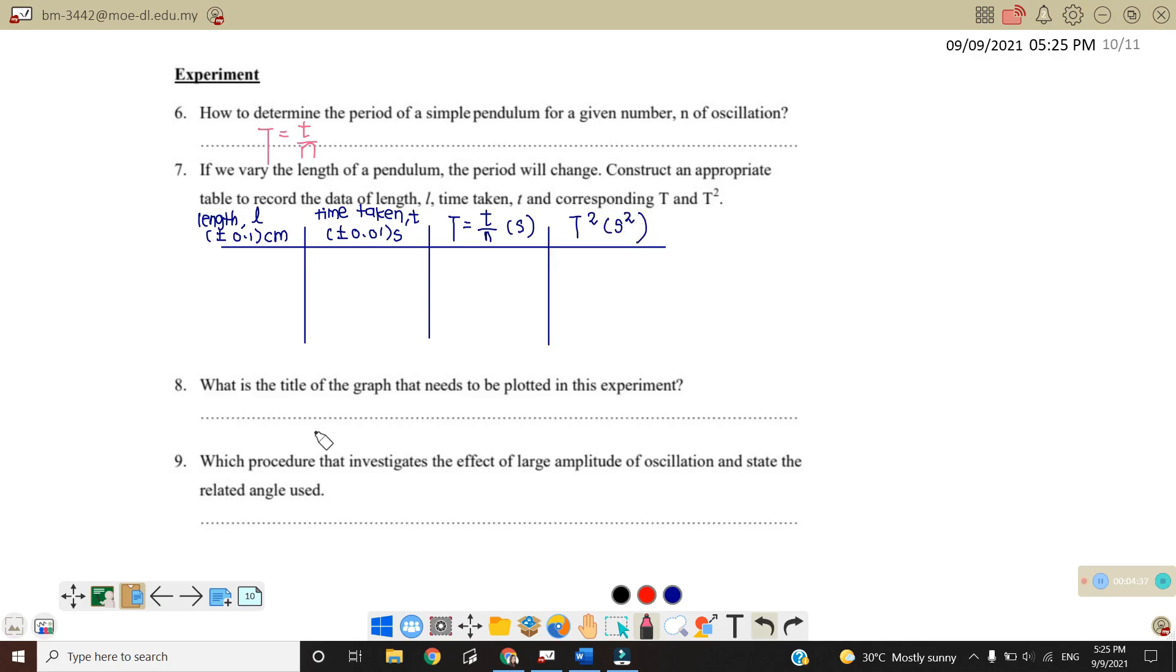Next, number eight, what is the title of the graph that needs to be plotted in this experiment? So the title here is T squared against the length. So later we will plot T squared against length. Number nine, which procedure that investigates the effect of the large amplitude of the oscillation and state the related angle used? So it's actually procedure number six, where the theta here we should apply is theta less than 10 degrees and also theta equals to 70 degrees.